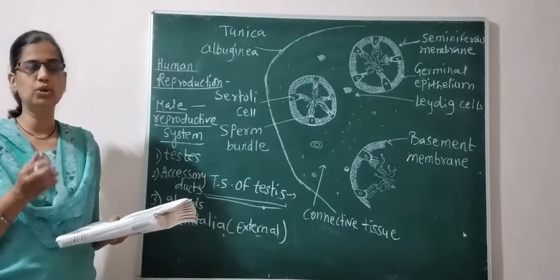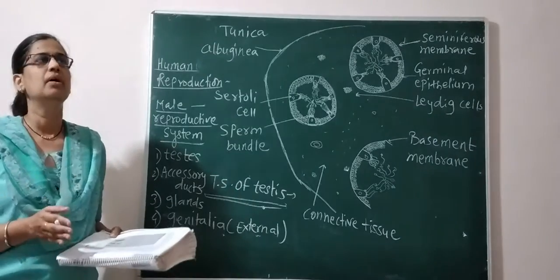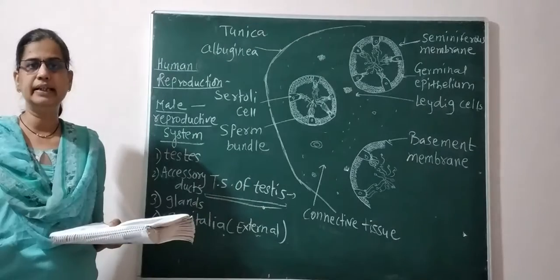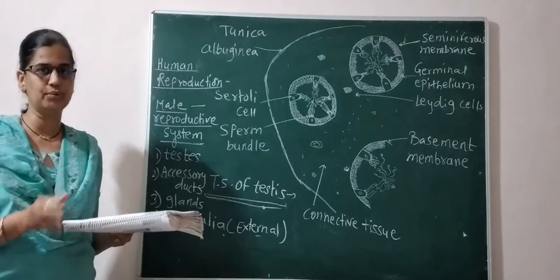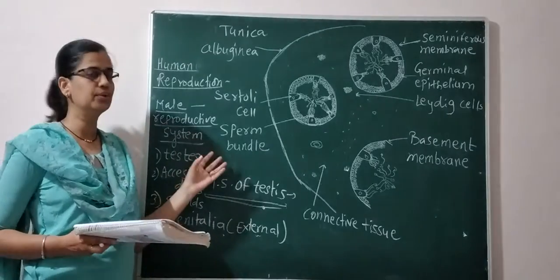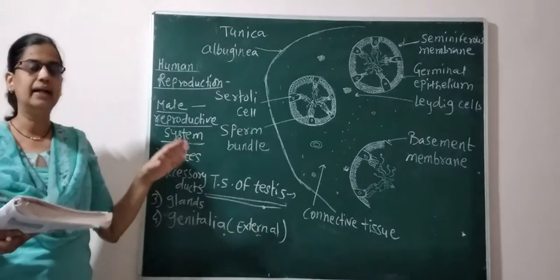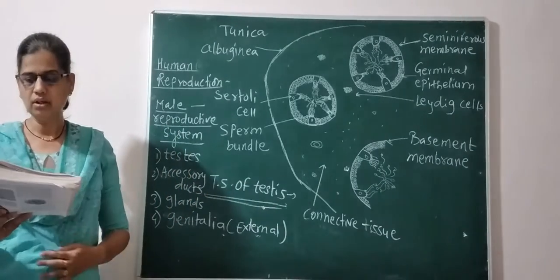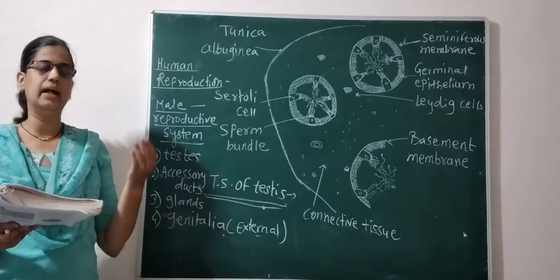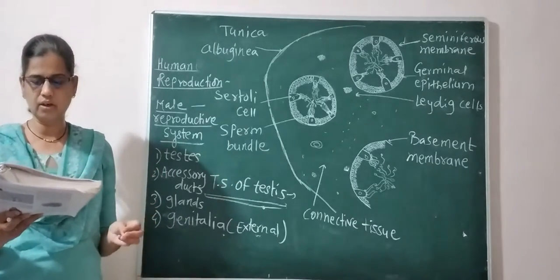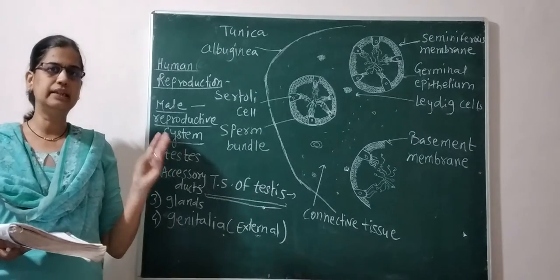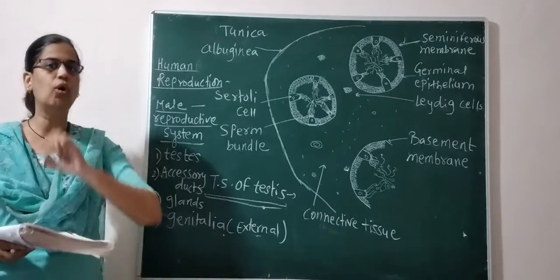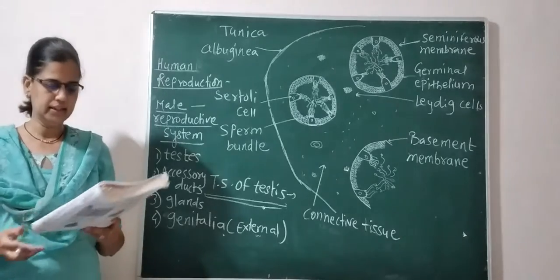Gametes — the formation of gametes is the main step. In the case of males there are sperms formed, and in the case of females there are eggs produced. Generally, sperms are produced in the testis in the male and eggs are produced in the ovary of the female. Organs other than the testis and ovary are involved in reproduction; these organs are called secondary sex organs. The testis and ovary are the primary sex organs, and all other organs involved in the reproduction process are secondary sex organs.